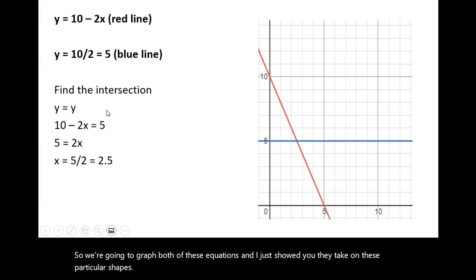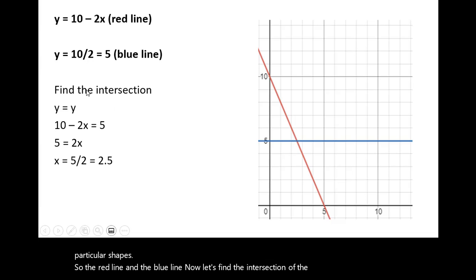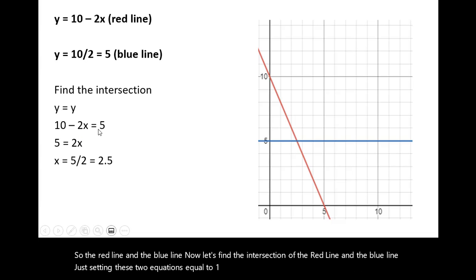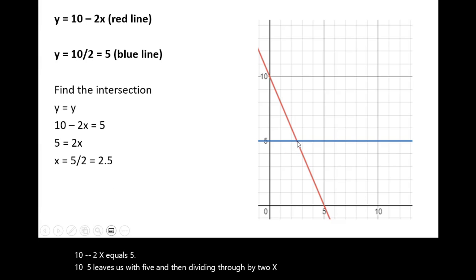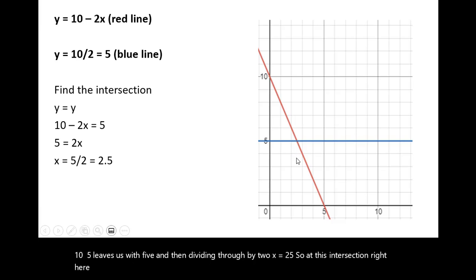So the red line and the blue line. Now let's find the intersection of the red line and the blue line. Just setting these two equations equal to one another. 10 minus 2x equals 5. 10 minus 5 leaves us with 5. And then dividing through by 2, x equals 2.5. So at this intersection right here, y is 5. And if we went to the x-axis, that would be 2.5.